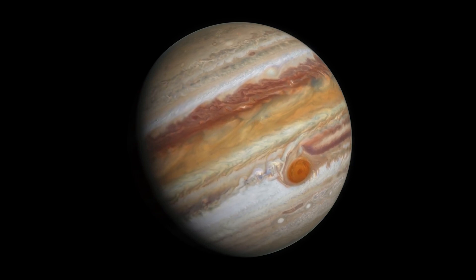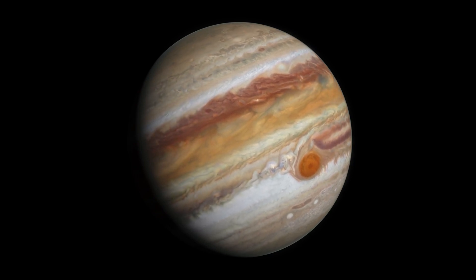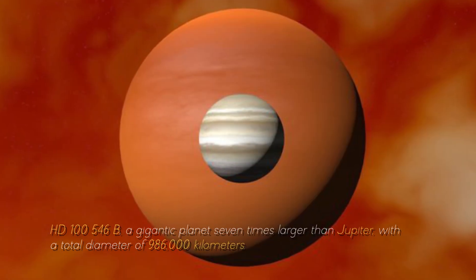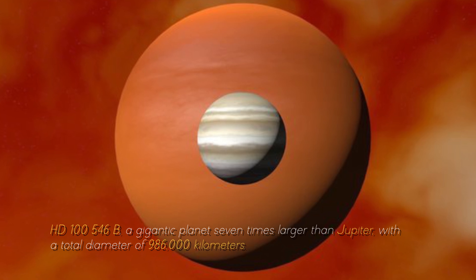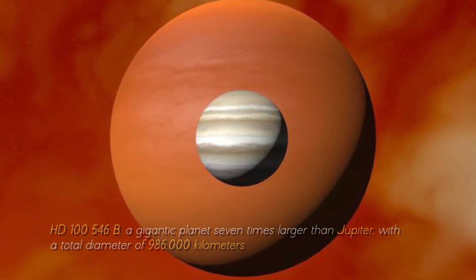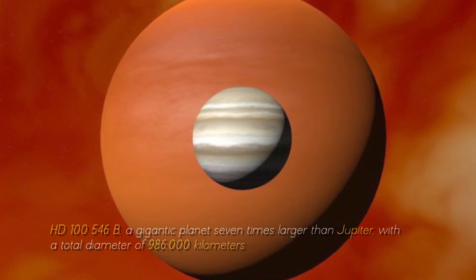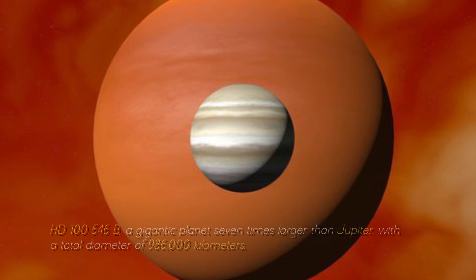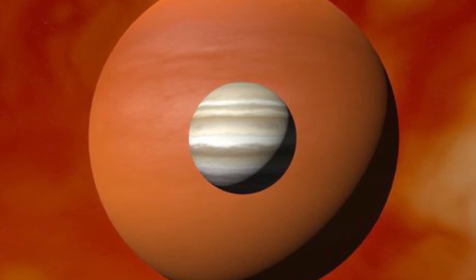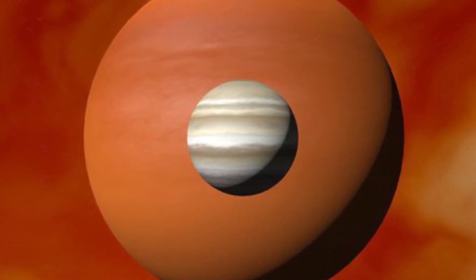Now, let's compare Jupiter with the largest planet in the known universe, HD-10546 b, a gigantic planet seven times larger than Jupiter, with a total diameter of 986,000 kilometers. You can imagine what Earth would look like near this cosmic monster, can't you?